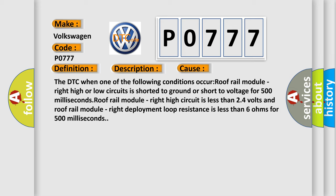The DTC occurs when one of the following conditions occur: Roof rail module, right high or low circuits is shorted to ground or short to voltage for 500 milliseconds. Roof rail module, right high circuit is less than 24 volts. And roof rail module, right deployment loop resistance is less than 6 ohms for 500 milliseconds.